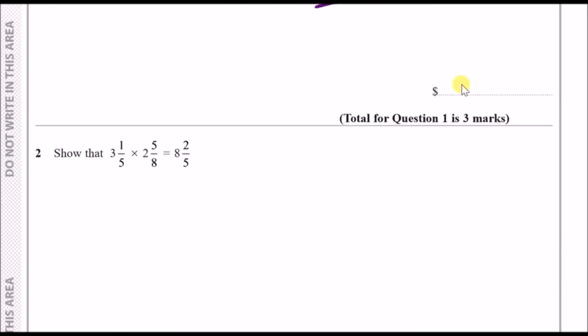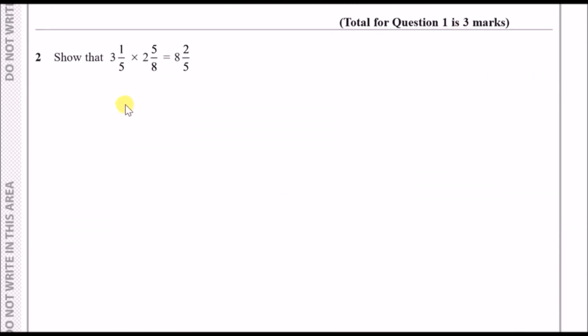For number two they want us to show that this multiplication equals the right hand side. As usual guys you cannot put this in your calculator straight away because you need to show some steps. What I would do is always rewrite this in improper fractions. To change 3 and 1/5 into improper fraction, multiply 3 with 5 which gives us 15 and add to the 1 which gives us 16, so it would be 16/5.